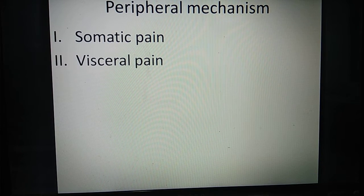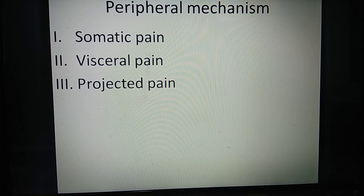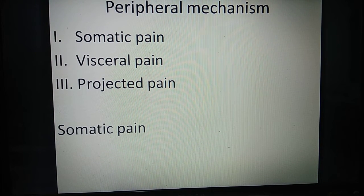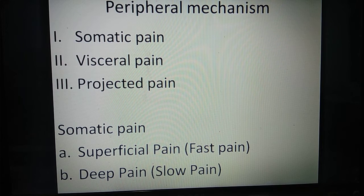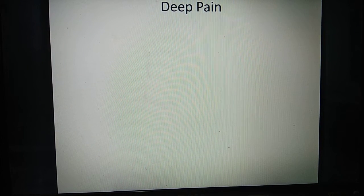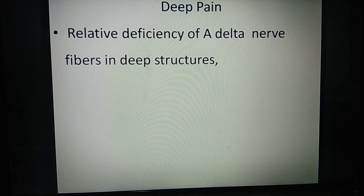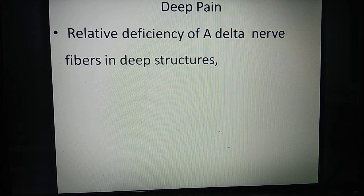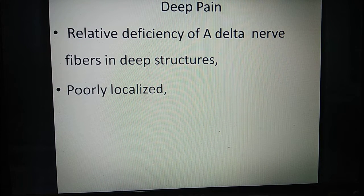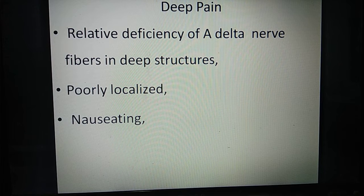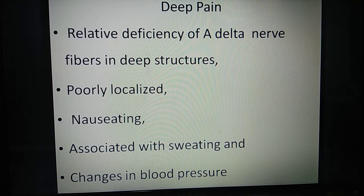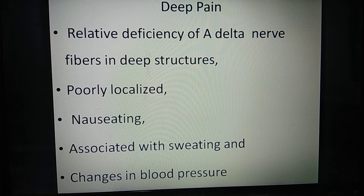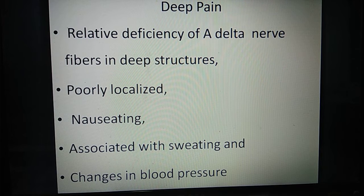Deep pain is carried by C fibers, which are slow, so it is also called slow pain. So in peripheral mechanism: somatic pain, visceral pain, and projected pain. Under somatic: superficial pain, also called fast pain, and deep pain, also called slow pain. In deep pain, there is a relative deficiency of A-delta fibers in deep structures, that's why it is poorly localized due to less representation in the cortex.